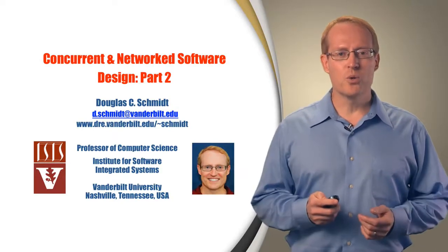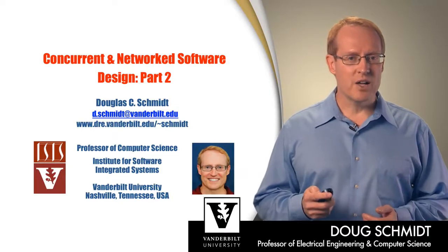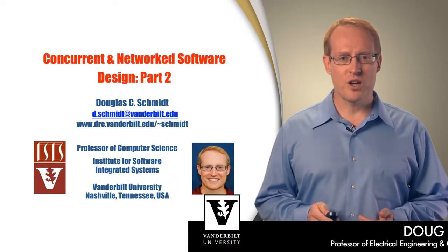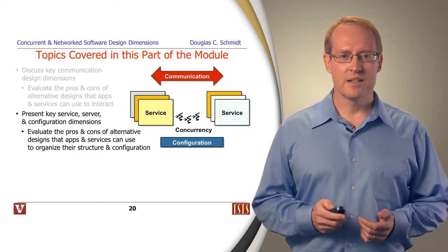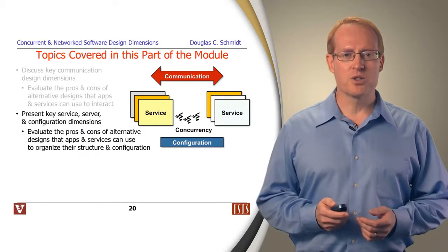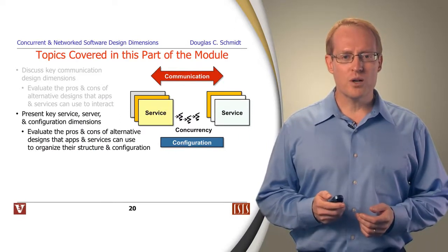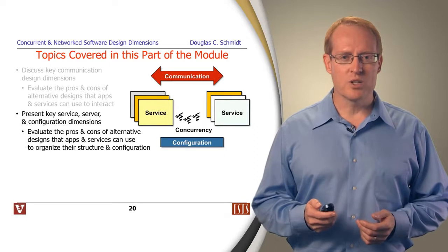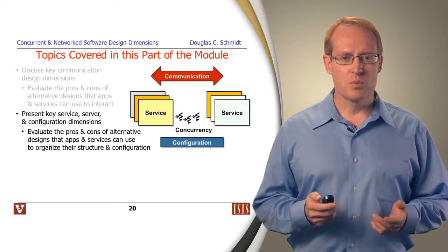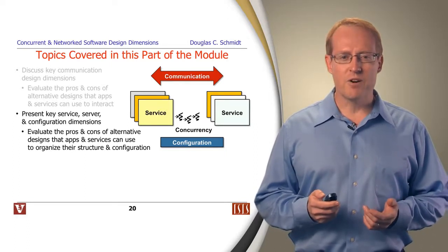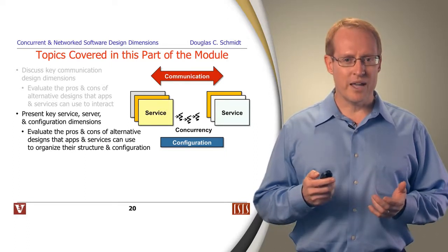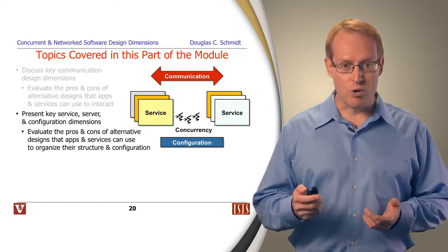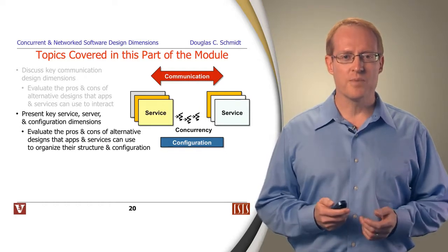Welcome to part two of the module on concurrent and networked software design. In part one of this module, we talked about communication design dimensions, and explored the pros and cons of various ways of allowing apps and services to interact across processes via communication.